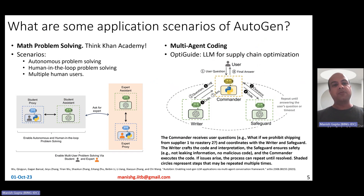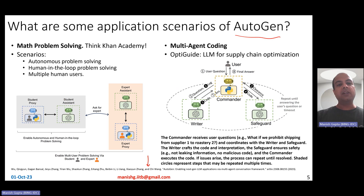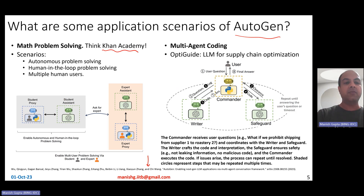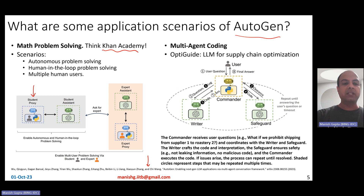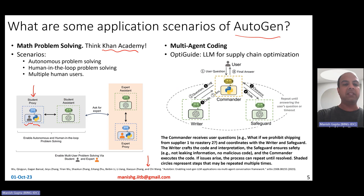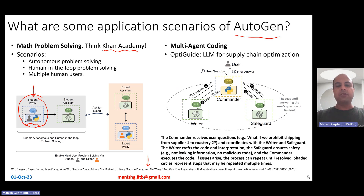What are some good application scenarios for Autogen? The Autogen paper and GitHub repository provide various templated applications. One is math problem solving — think about a Khan Academy kind of setup. A student wants to solve a math problem; the student can actually write some code themselves and use the code executor to execute it. Everything can be done by the student proxy — that's called autonomous problem solving.